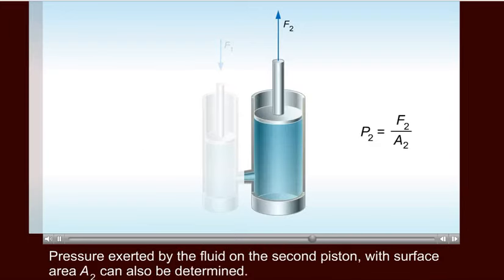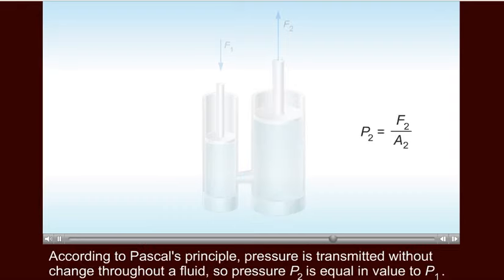Pressure exerted by the fluid on the second piston with surface area A2 can also be determined. According to Pascal's Principle, pressure is transmitted without change throughout a fluid, so pressure P2 is equal in value to P1.